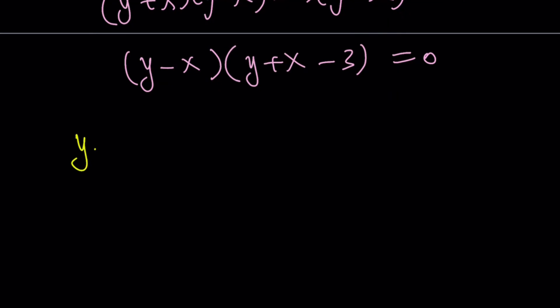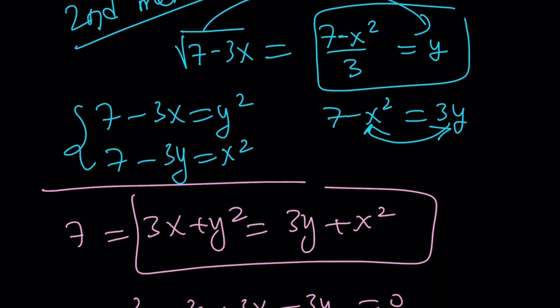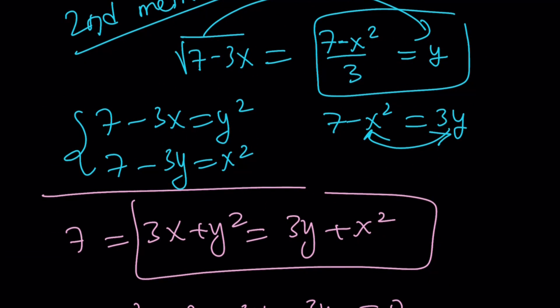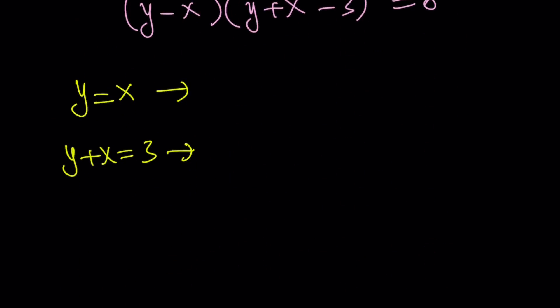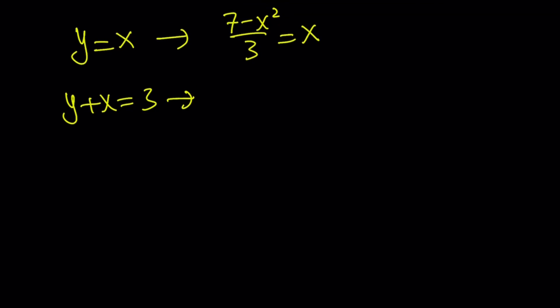y equals x. And y plus x equals 3. And of course this has consequences. Let's go back where we substituted x or y or y for x or x or y, something like that. We can replace y with 7 minus x squared over 3. 7 minus x squared over 3. Try to memorize that.